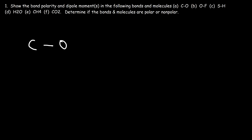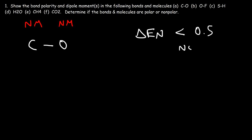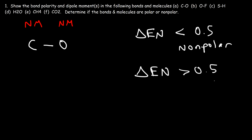What we have here is a covalent bond — carbon and oxygen are both nonmetals. Whenever you have two nonmetals combined, typically a covalent bond is formed. To determine if it's polar or nonpolar, we need to look at the electronegativity values. If the EN difference is less than 0.5, you have a nonpolar bond. If the electronegativity difference is greater than 0.5, then you have a polar covalent bond.